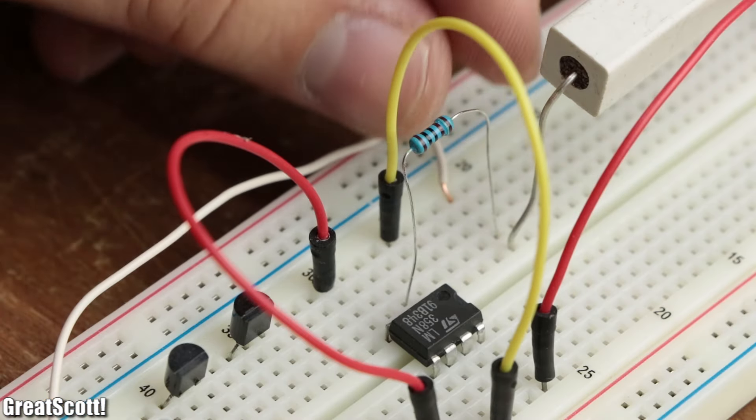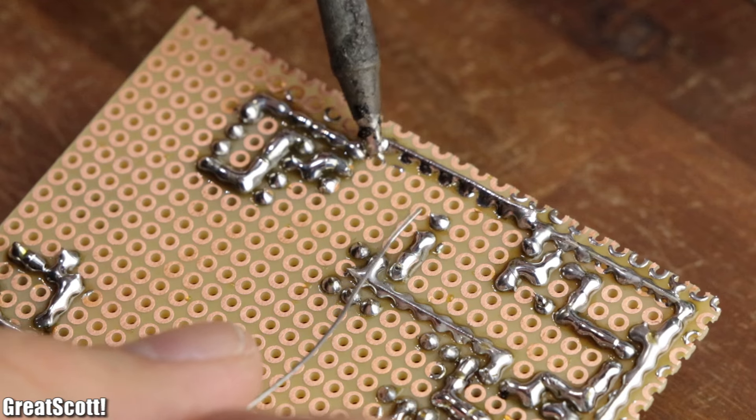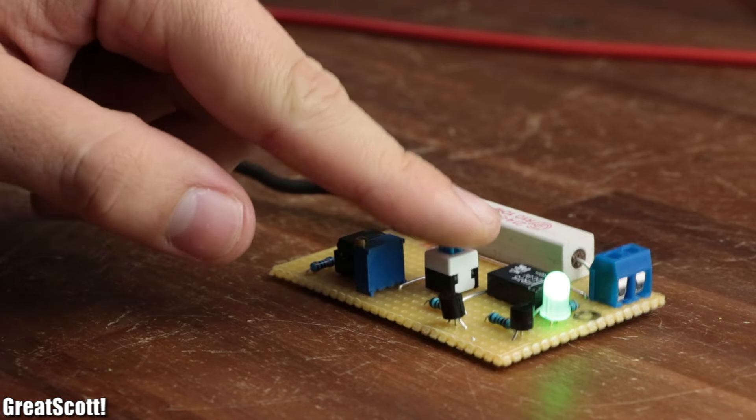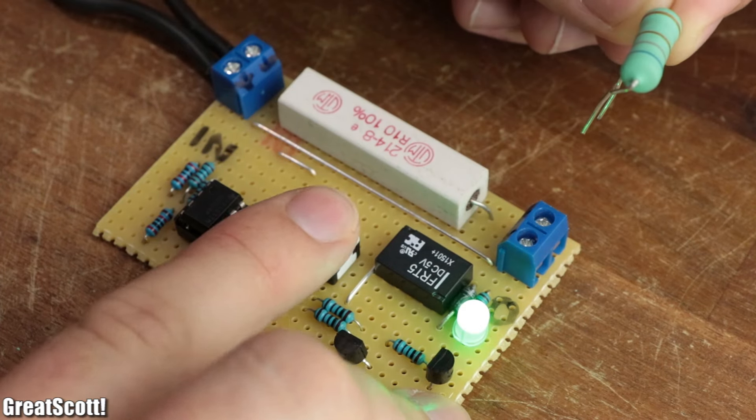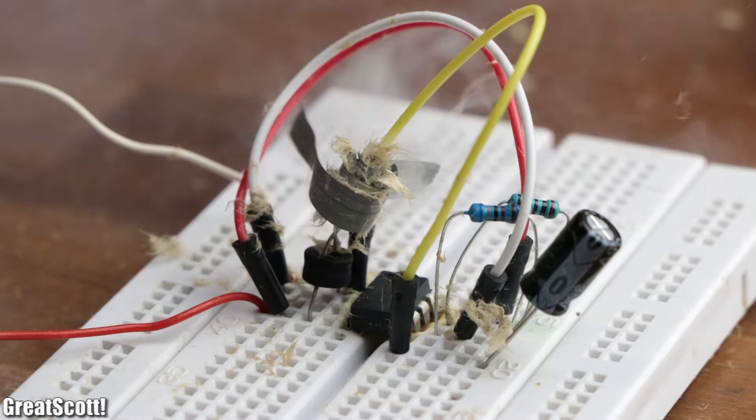So in this video I will show you how to create a simple circuit that connects in between your power source and your circuit and will interrupt the current flow whenever a set current limit is reached. Let's get started.